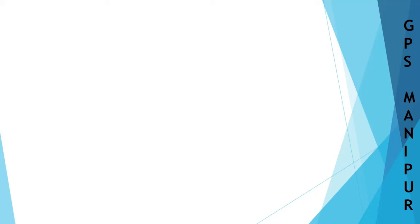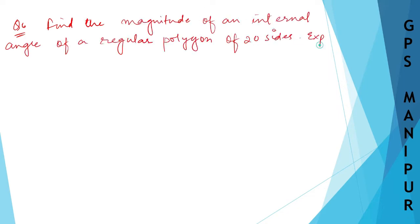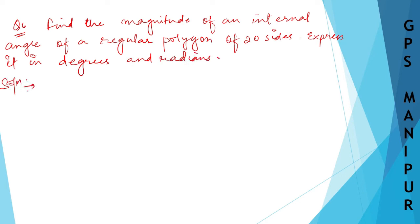We are doing exercise 13.1 question number 6: find the magnitude of an internal angle of a regular polygon of 20 sides and express it in degrees and radians.